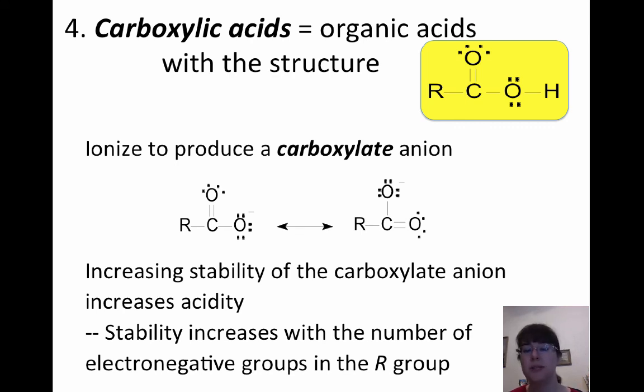You wind up producing what we call a carboxylate anion from this when you remove the hydrogen. So the more stable the anion is, the more acidic the acid is. So the happier the compound is with that negative charge, the more likely it is to be in a state with a negative charge.